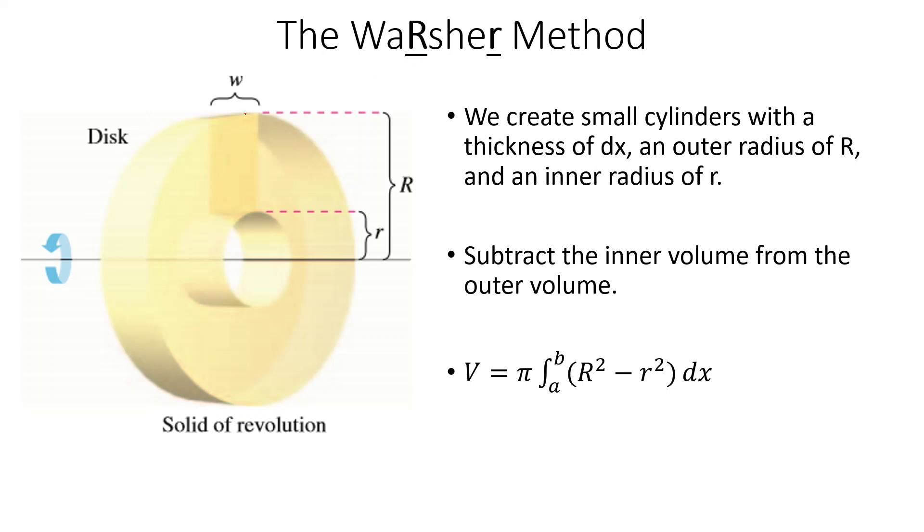So what ends up happening is we have this large radius, which we're calling capital R, and then we're missing this kind of a hole in the middle. It's like a donut or what's called a washer. When you use it on the end of a screw or the end of a bolt, it's just a little metal piece that has a hole in the middle that looks something like this.